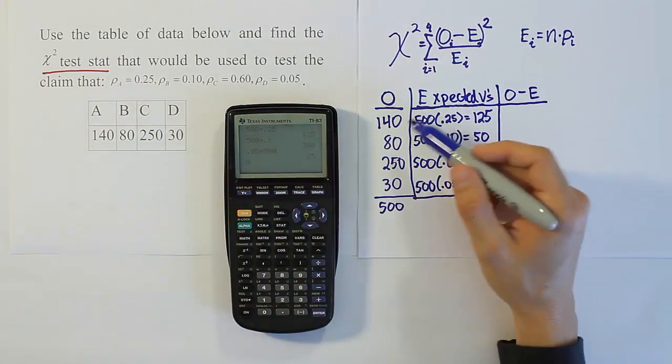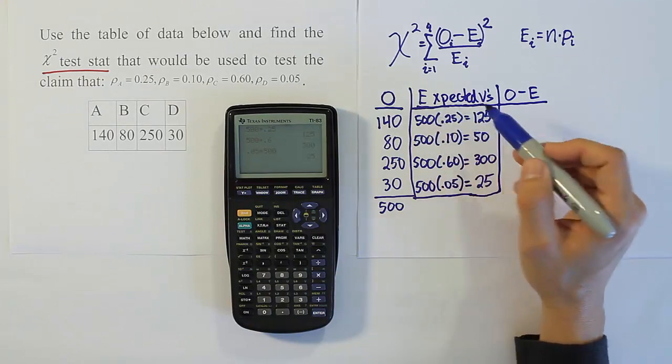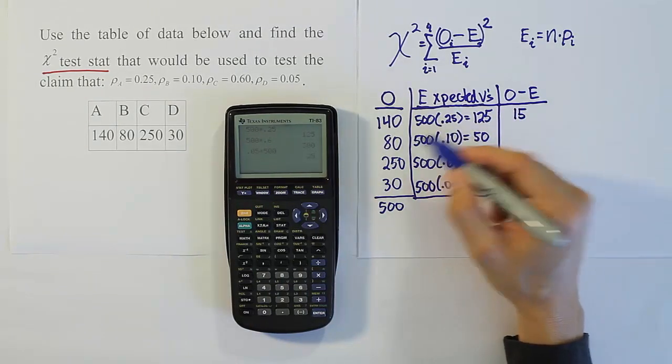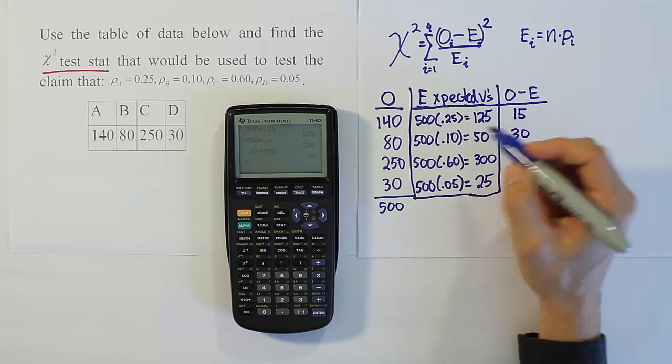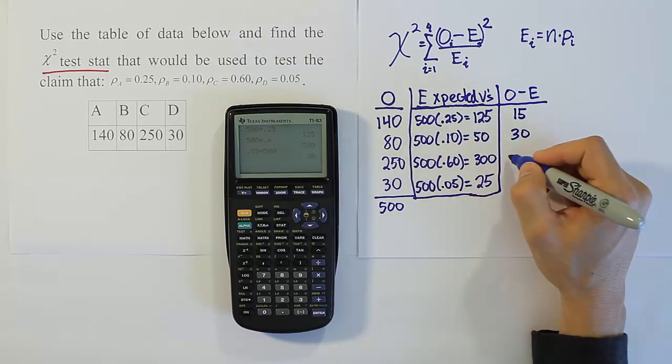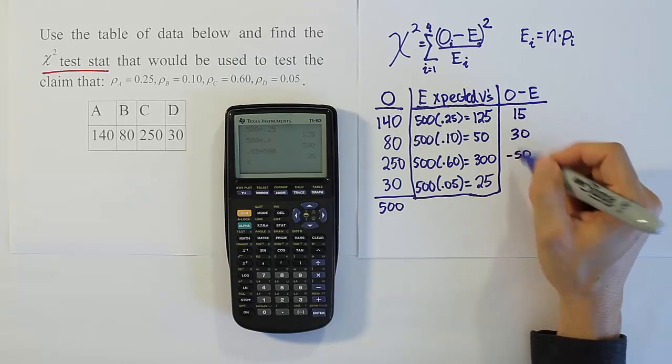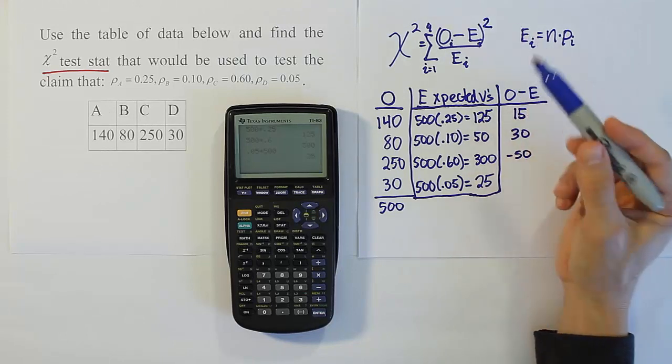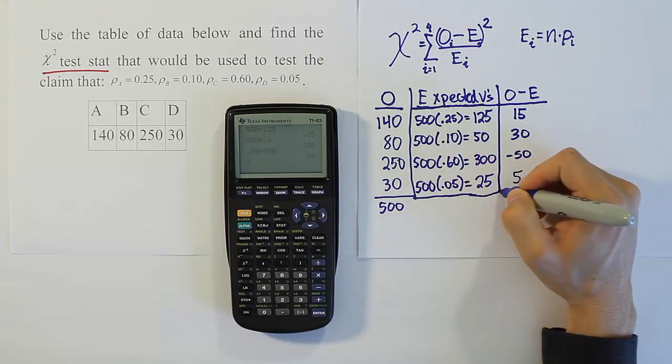Okay, so we're just going to do all the subtractions straight across, right? So 140 minus 125 gets 15, you know, so on and so forth. 80 minus 50 is 30. 250 minus 300 is negative 50. The negatives aren't so important because we are going to square them later, right? And 30 minus 25 is 5.